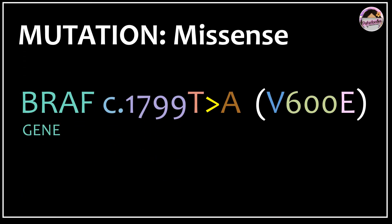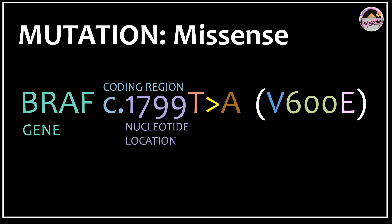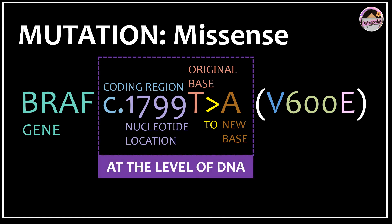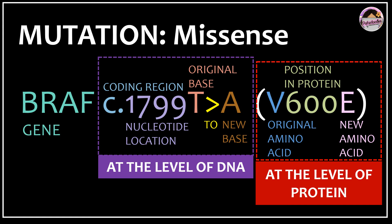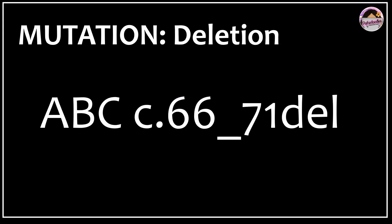BRAF is the name of the gene. 'c' stands for coding region. 1799 is the nucleotide location in the coding region. At this location, the original base thymine has been changed to a new base adenine. At the protein level, 'V' is valine — the original amino acid — at position 600 in the protein chain, and this has now changed to a new amino acid. This is a non-conservative missense mutation, denoted at the level of protein.